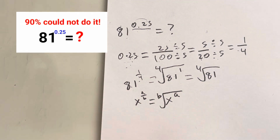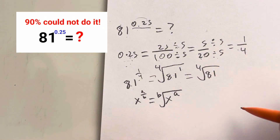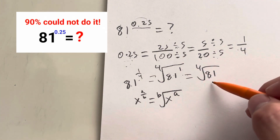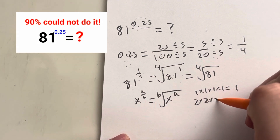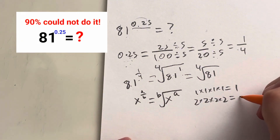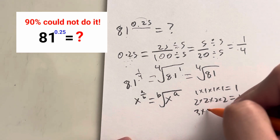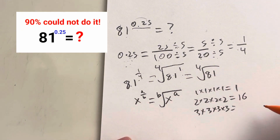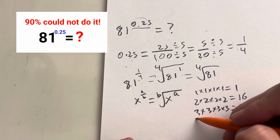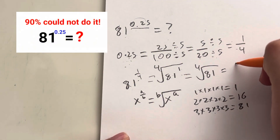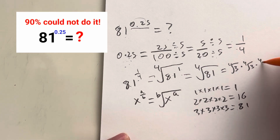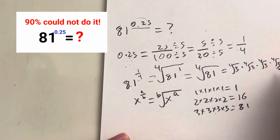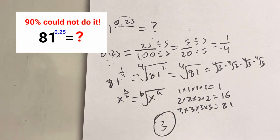We need to figure out what number multiplied by itself four times equals 81. 1 to the fourth is 1. 2 to the fourth is 16. 3 times 3 times 3 times 3 is equal to 81. So the fourth root of 81 gives you a final answer of 3.